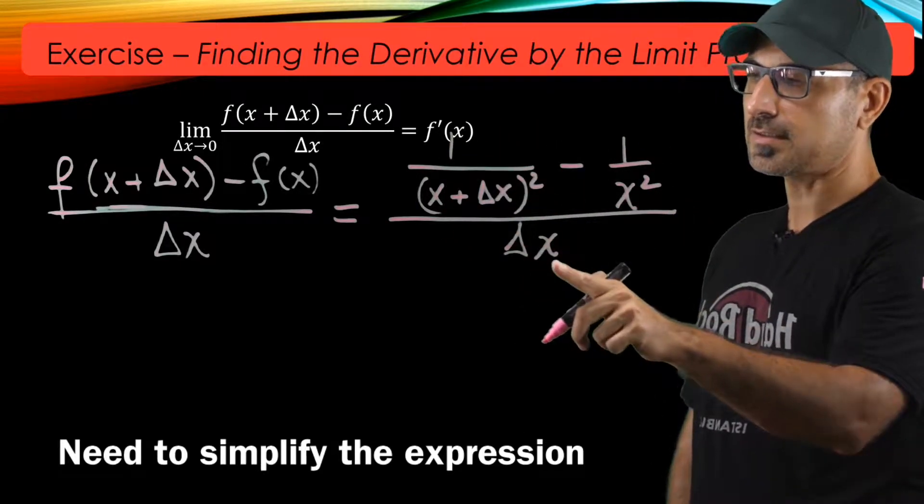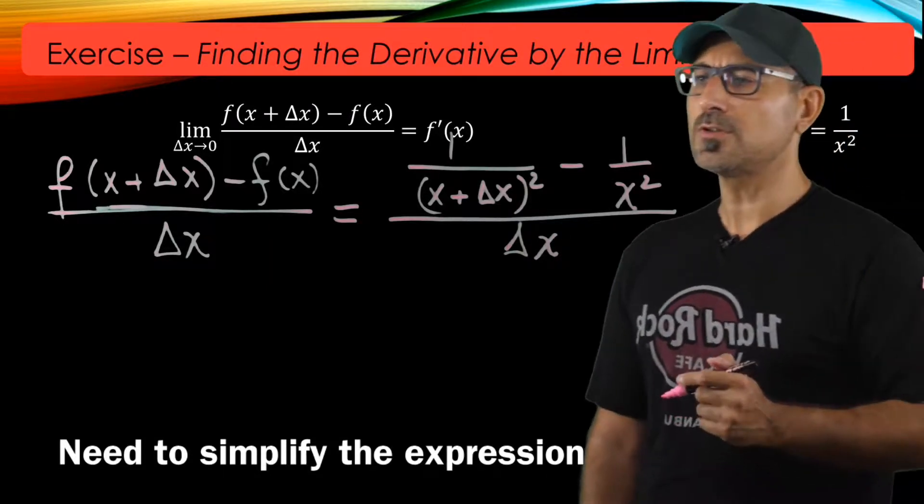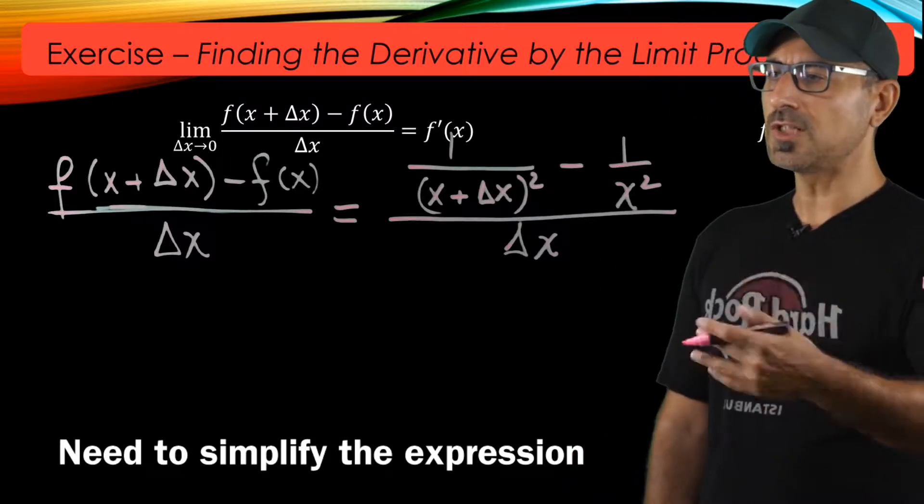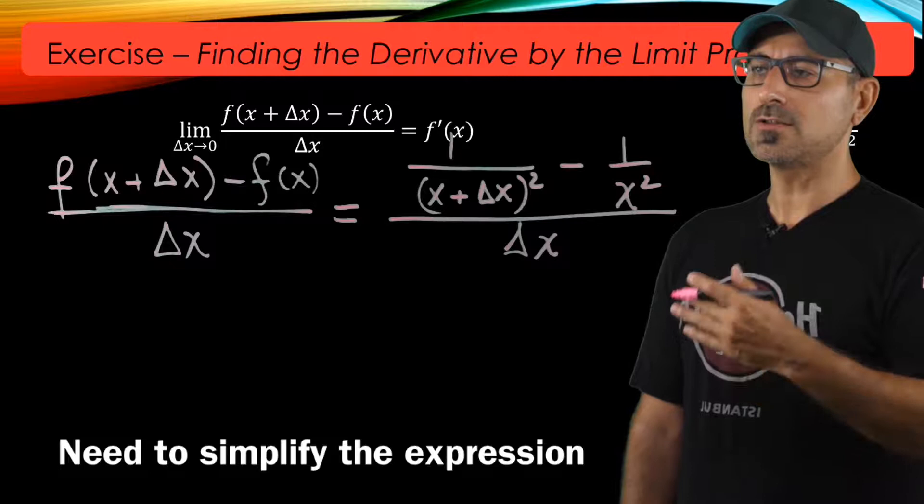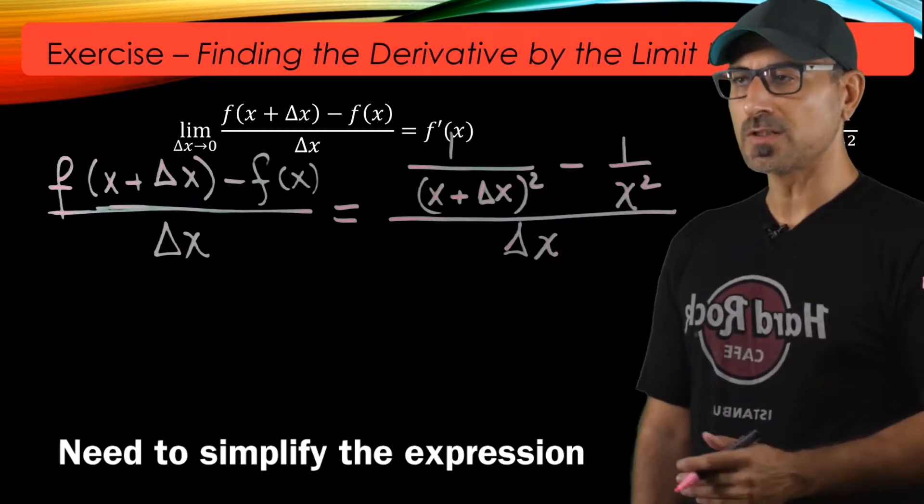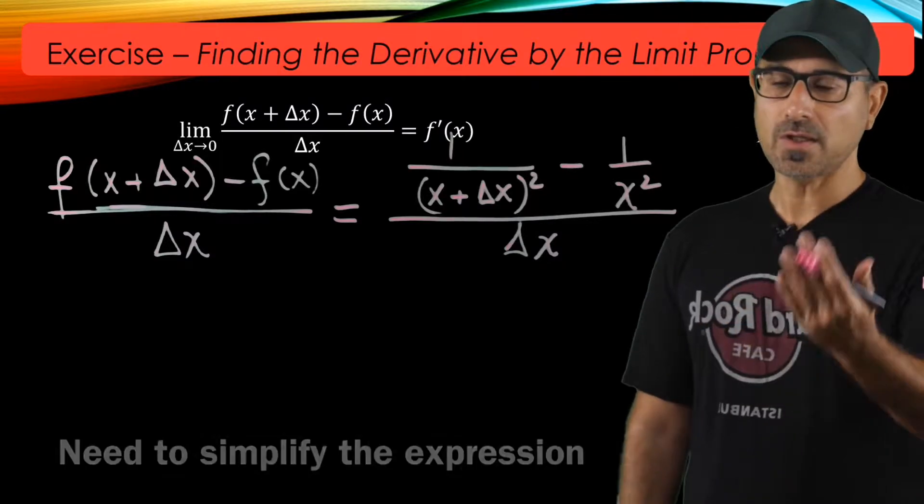And remember in chapter 2 that 0 over 0 is one of the indeterminate forms. So to avoid that, we try to find another version of the function by going through a simplification process. So we're going to do the same thing here.